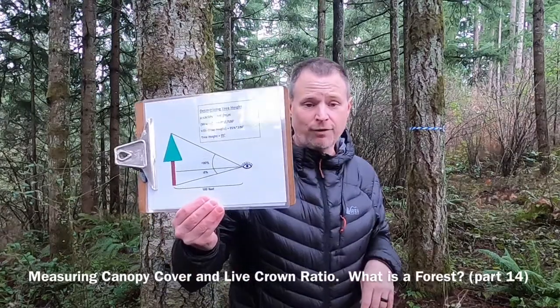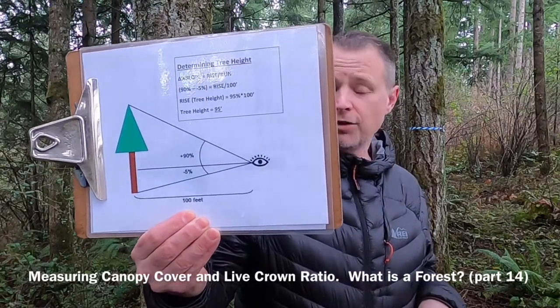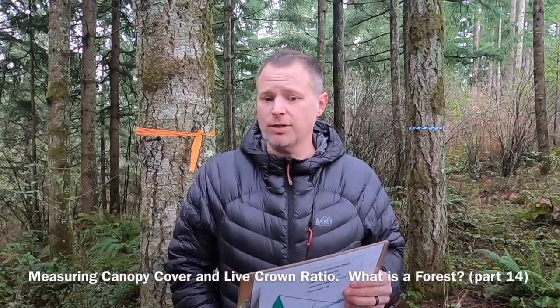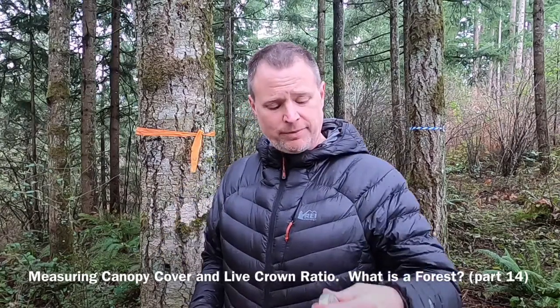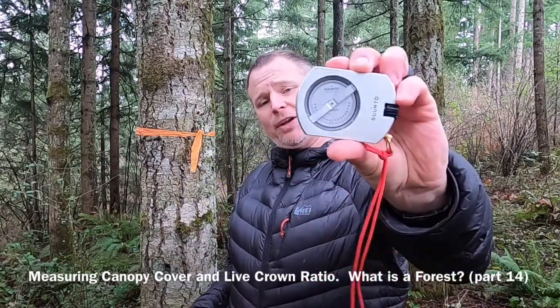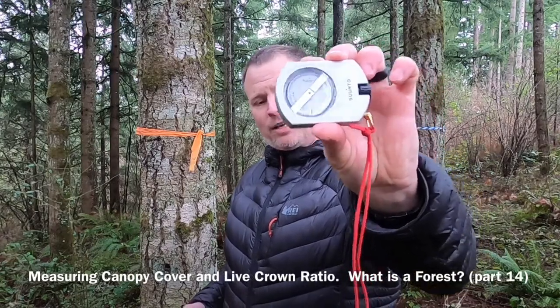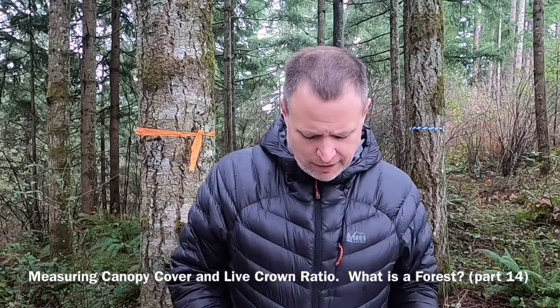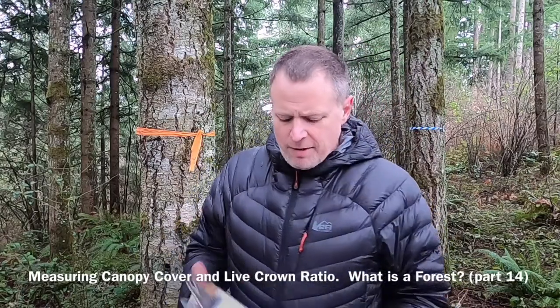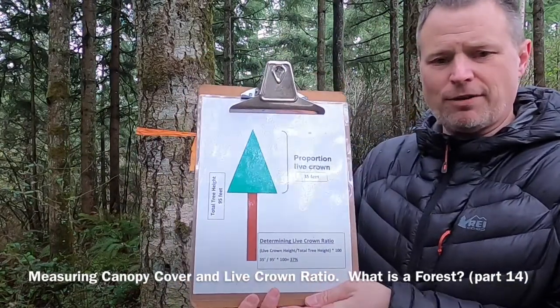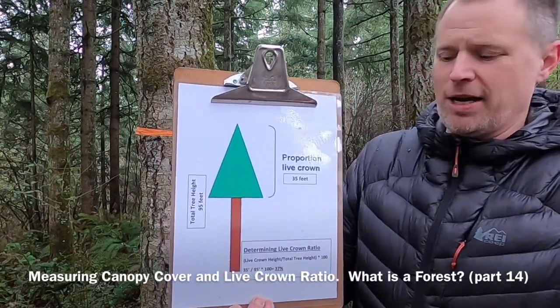If you remember back from our last video where we went through and measured tree height, we're going to be doing the same thing. You're going to be taking a clinometer and measuring the overall height of a tree. The clinometer — I call it a fancy automatic protractor — measures the vertical angles. We use that to measure the height of the tree, but we're also going to get a couple of other measurements, and a lot of times it's going to be estimated.